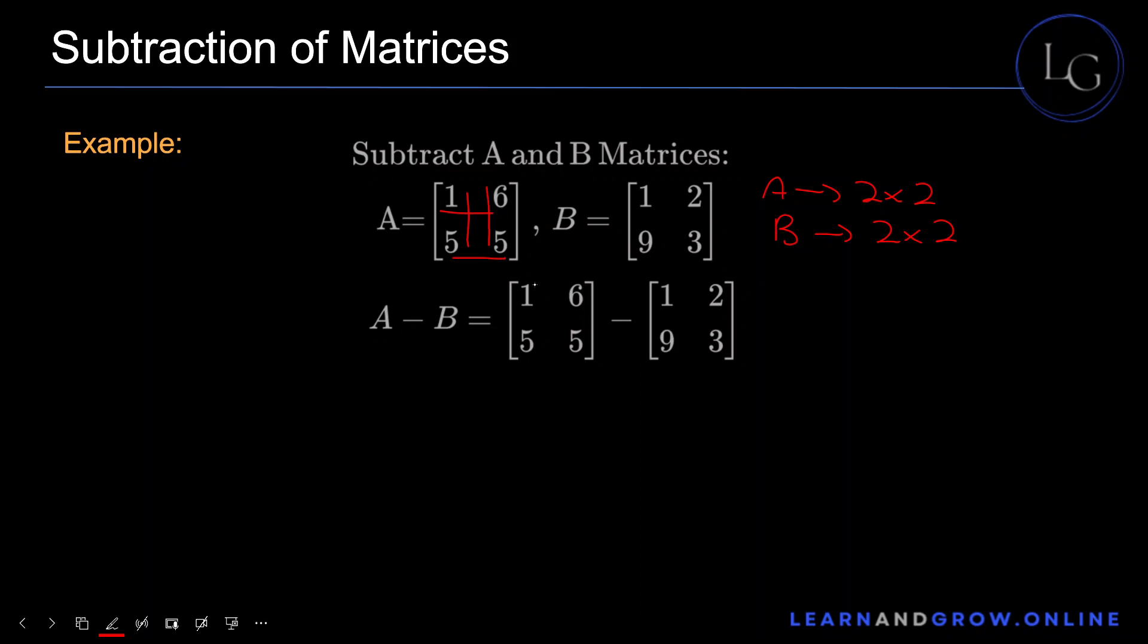A minus B - well, as we've seen before, we'll subtract the corresponding entries. So 1 minus 1, 6 minus 2, 5 minus 9, and 5 minus 3. This will be your resultant matrix.